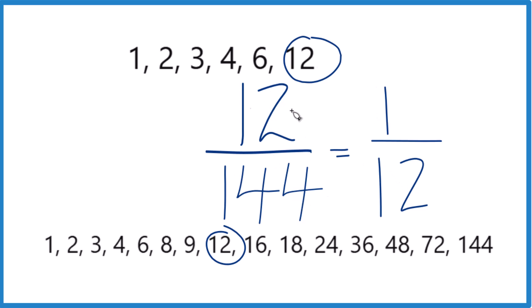You could also do it this way. You could divide each of these by 2 since they're even, and you get even numbers again. Divide that by 2, and eventually you would end up with 1/12. That might be an easier way to do it if you didn't want to write out all of these factors here.